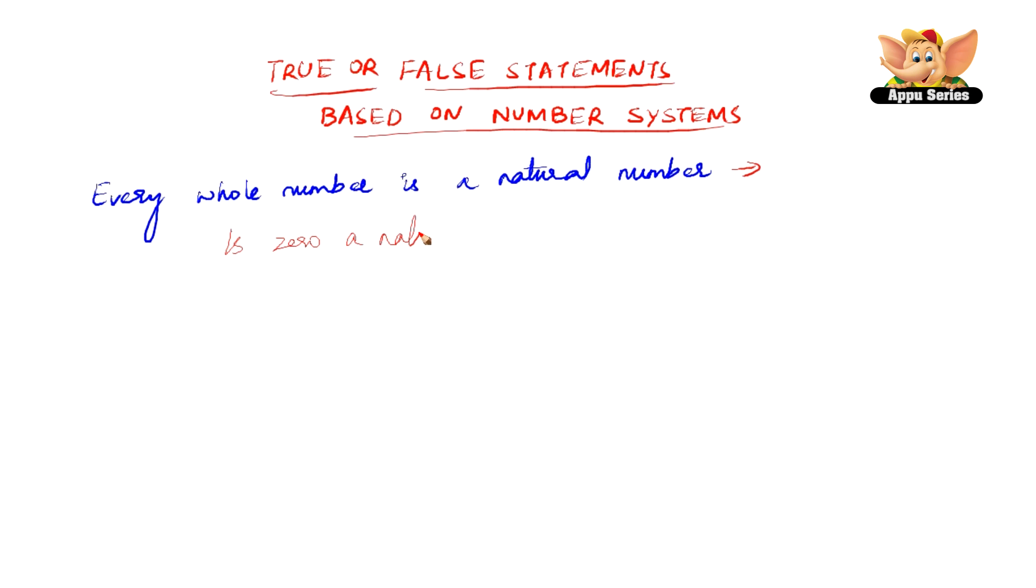So, is 0 a natural number? That is the question you have to ask yourself to answer if this statement is true or false. 0 is not a natural number, but 0 is a whole number. Therefore, every whole number is not a natural number. So this statement is false.